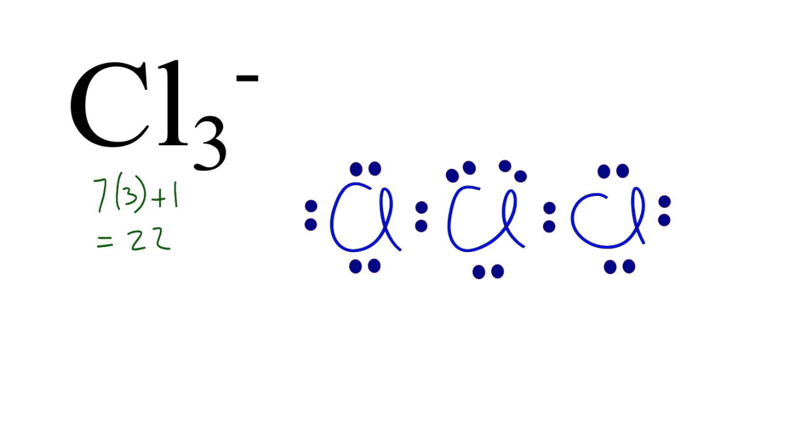So that's the Lewis structure for Cl3 minus. This is Dr. B, and thanks for watchin'.